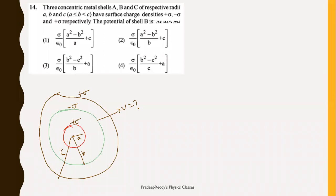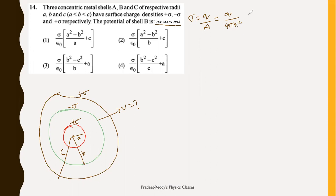Coming to the next question, asked in JEE Mains 2018. There are three concentric shells: the first has charge density +sigma and radius a; the second has charge density -sigma with radius b; the third has +sigma and radius c. Each shell has its own charge. Using sigma = q/(4 pi r²), the charge on any surface is q = sigma × 4 pi r².